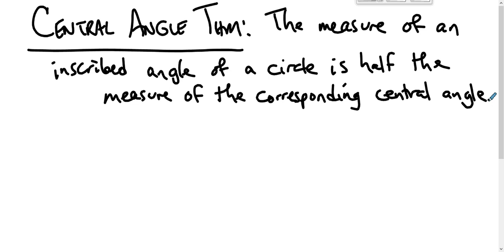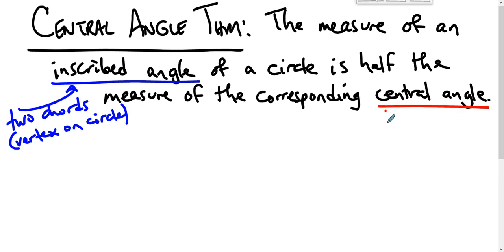Now we should define what we mean by this. An inscribed angle is formed by two chords; its vertex is on the circle. A central angle is formed by two radii, and its vertex is at the center of the circle.